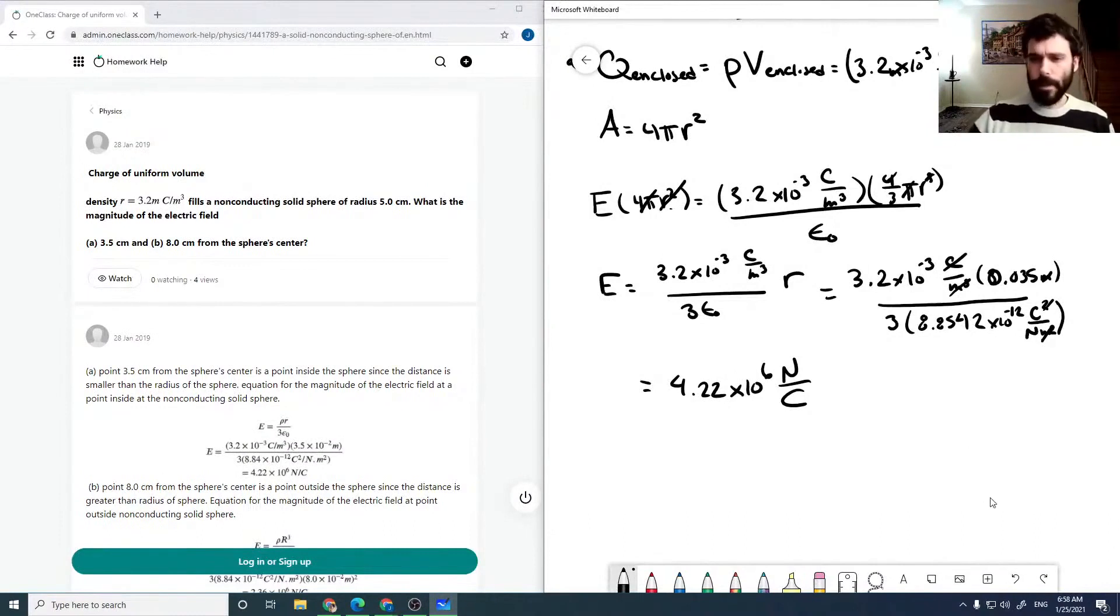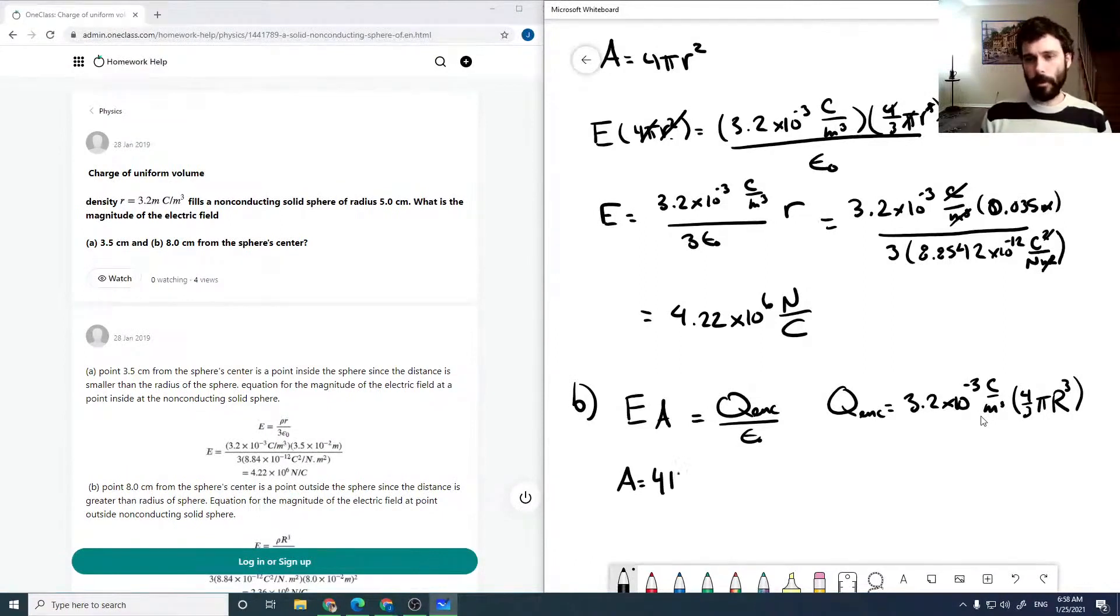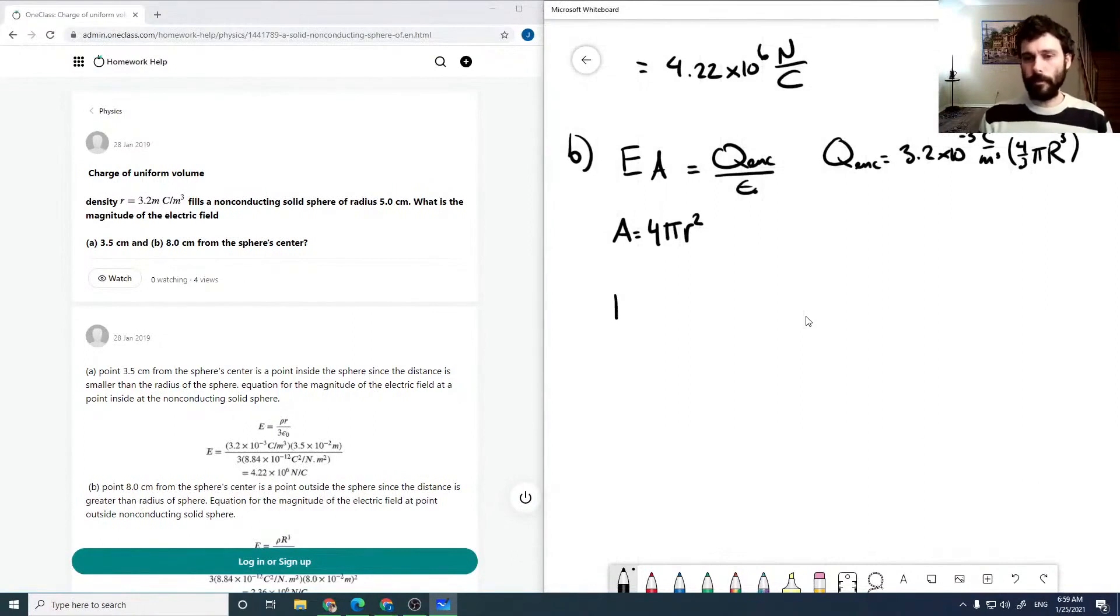For part B, it's outside the sphere. So Ea equals Q enclosed over epsilon naught. Q enclosed in this case is the entire sphere, so it would be rho, the density, times four-thirds pi times the sphere radius cubed. The area is still 4 pi r squared, where r in this case is 8 centimeters.